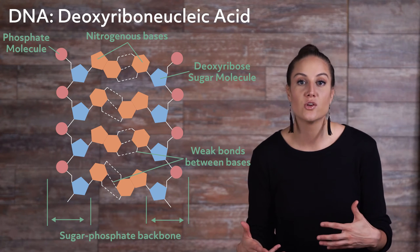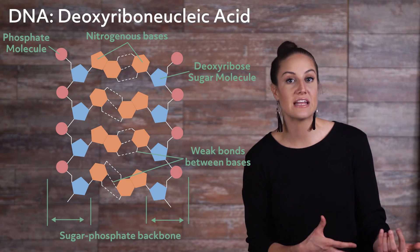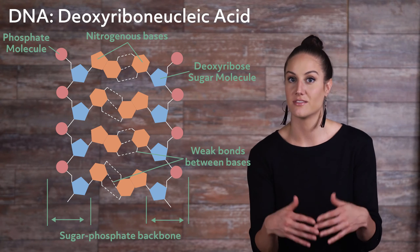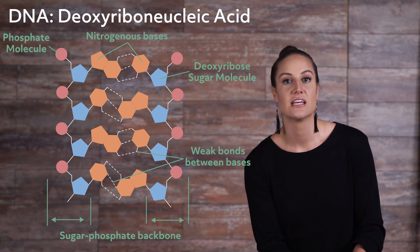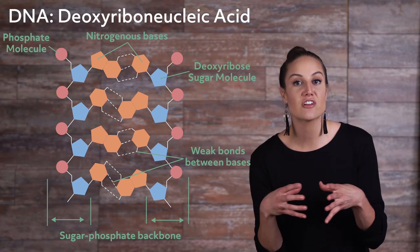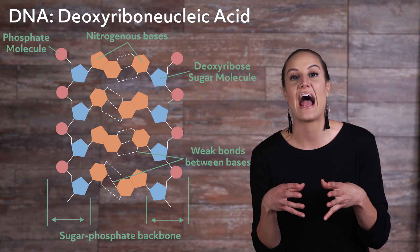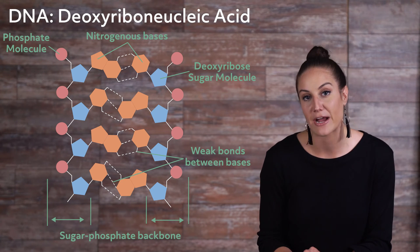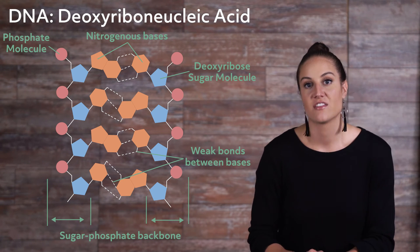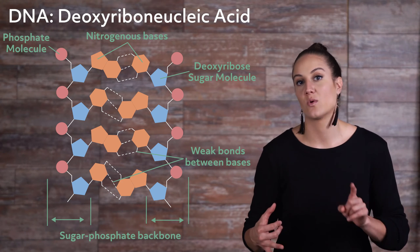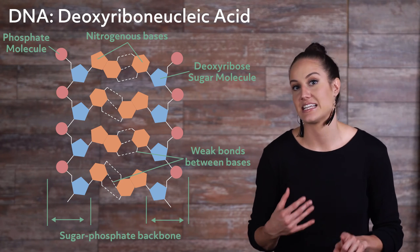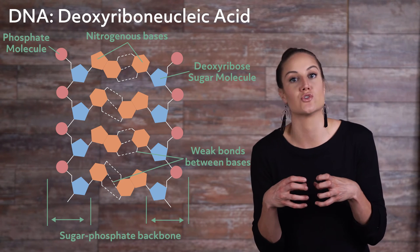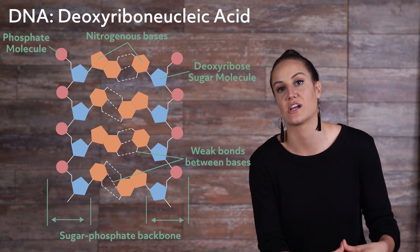The phosphate molecule forms a covalent bond, which means it shares electrons with the deoxyribose sugar. These hydrogen bonds are what actually cause the DNA strand to spiral. The nitrogenous bases — adenine, guanine, cytosine, and thymine — are sandwiched between the two sugar phosphate strands.